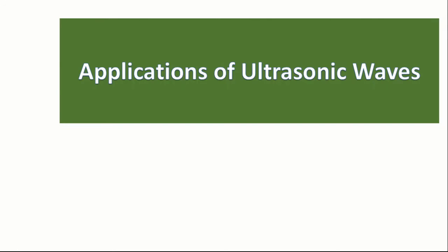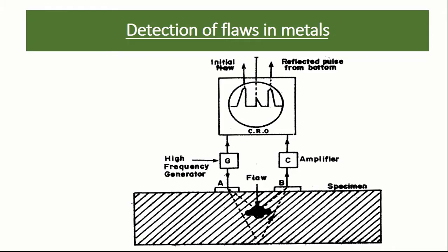Applications of ultrasonic waves in science and engineering: Detection of flaws in metals. It consists of an ultrasonic frequency generator and a cathode ray oscilloscope, transmitting transducer A and receiving transducer B, and amplifier. In flaws there is a change of medium and this produces a reflection of ultrasonic at the cavities or cracks.